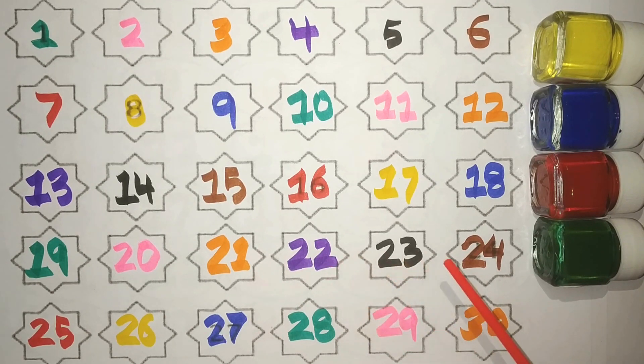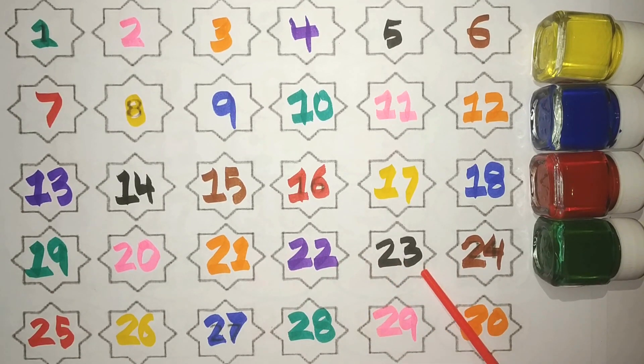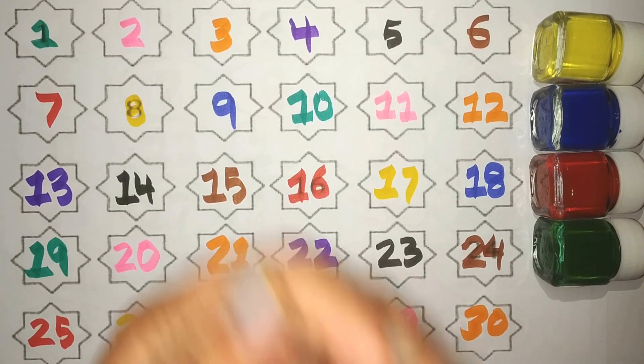23 Purple, 24 Black, 25 Brown, 26 Red, 27 Yellow, 28 Blue, 29 Green, and 30 Pink, Orange. Simple.